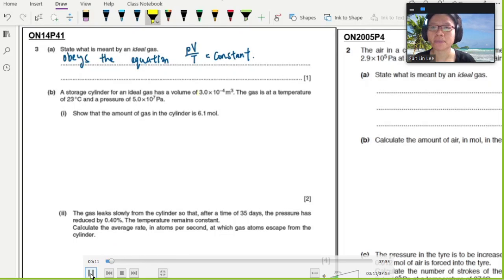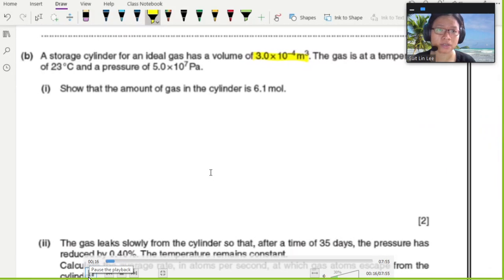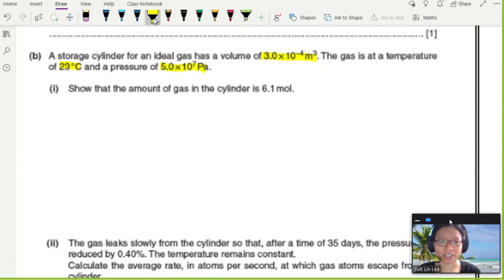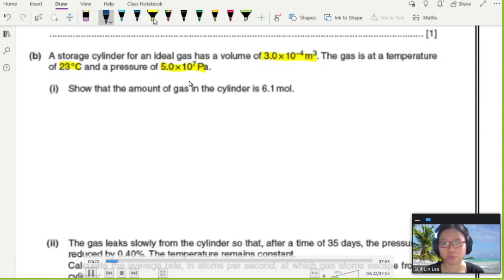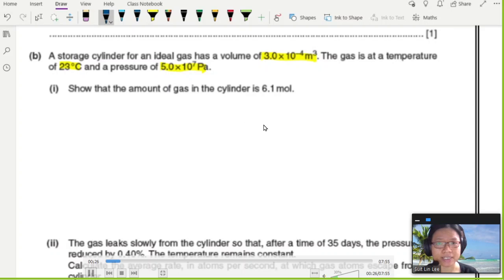Part B: A storage cylinder of ideal gas has a volume of 3.0×10^-4 m³. The gas is at a temperature of 23°C and a given pressure. Part (i): Show the amount of gas in the cylinder is 6.1 mol.